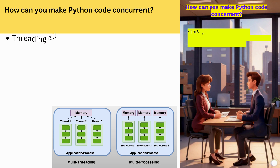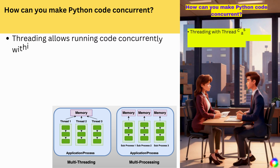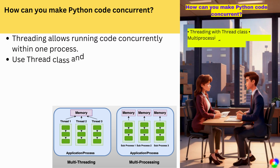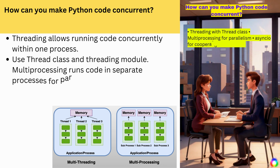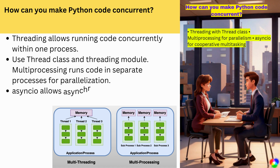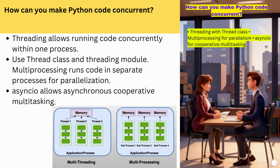How can you make Python code concurrent? Threading allows running code concurrently within one process — use the Thread class and threading module. Multiprocessing runs code in separate processes for parallelization. asyncio allows asynchronous cooperative multitasking.